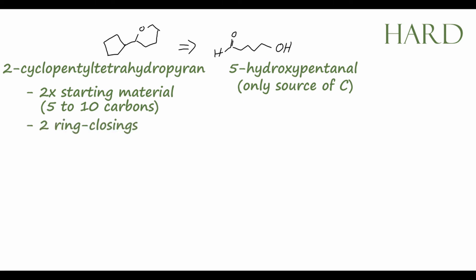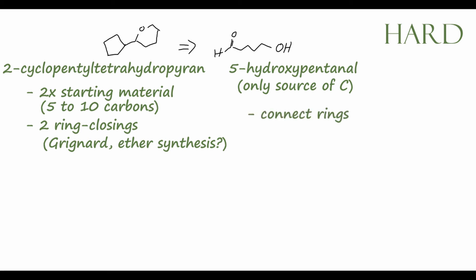We also have two ring closings to perform at some point. We have this 5-membered cyclopentane ring, which we could probably synthesize using a Grignard reagent. And we have this 6-membered tetrahydropyrane ring — a cyclic ether — which we may be able to synthesize through two alcohol groups joined together with acid. Finally, somehow we need to connect those two rings, so that carbon-carbon bond connection will probably be realized through another Grignard reaction.